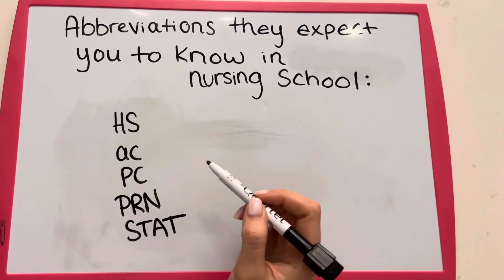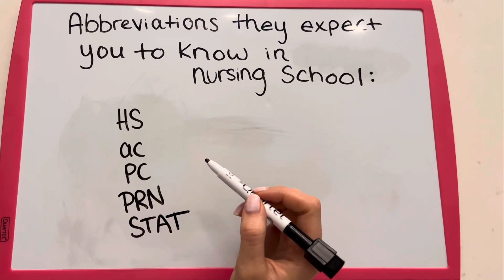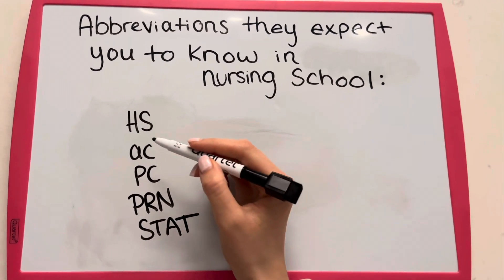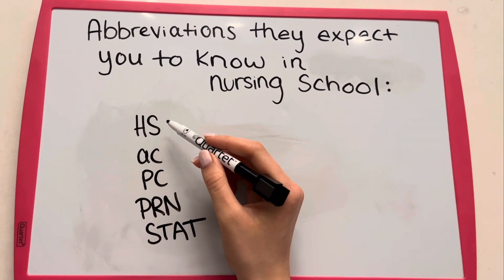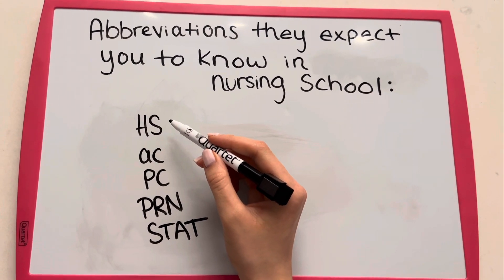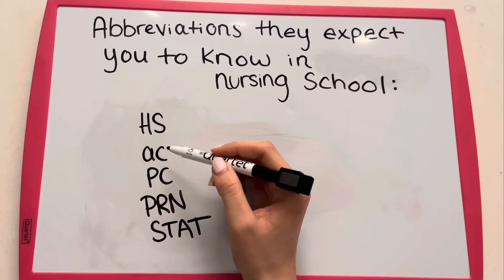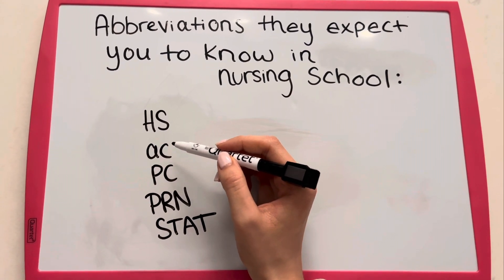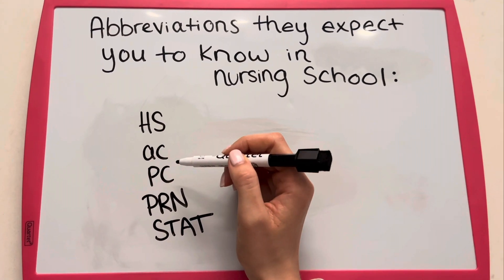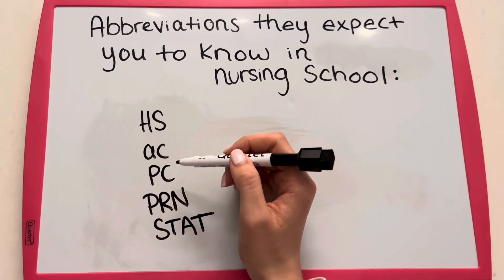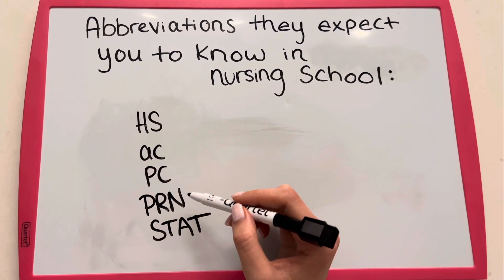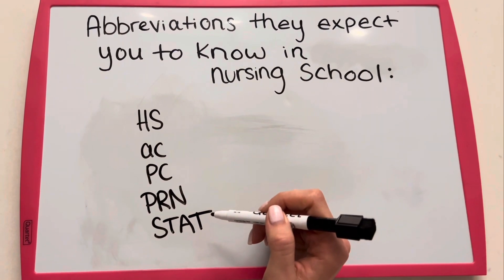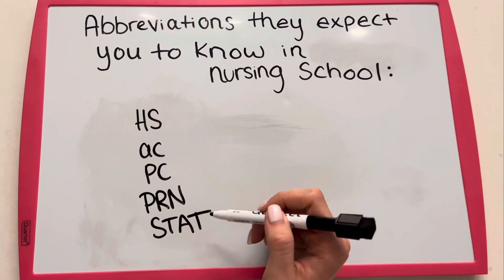The following are used to describe most often when medications are given. HS describes at bedtime, AC is before a meal, PC following a meal, PRN as needed, and STAT is to be given immediately.